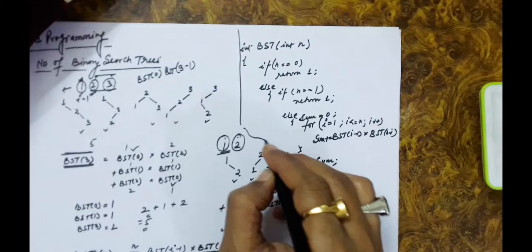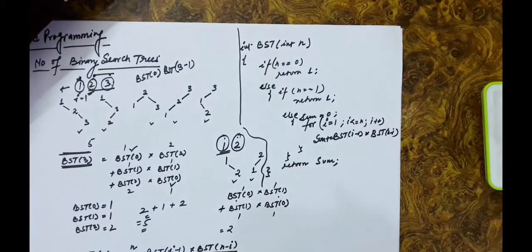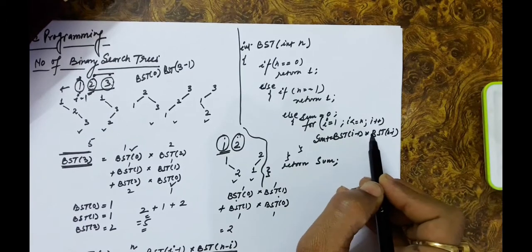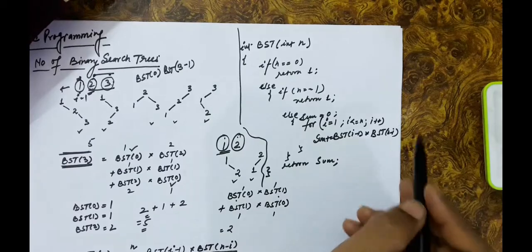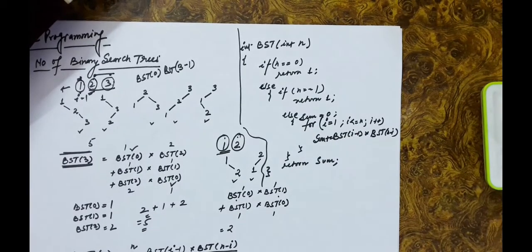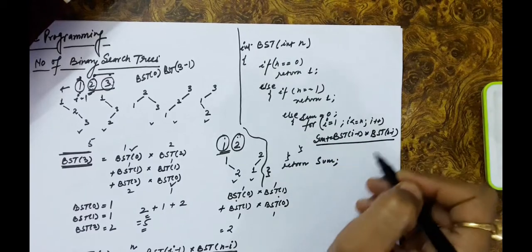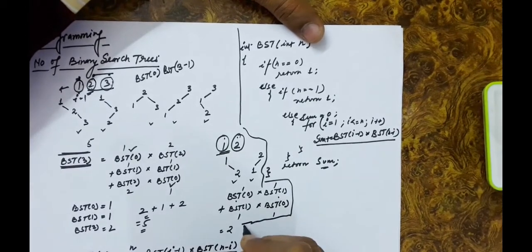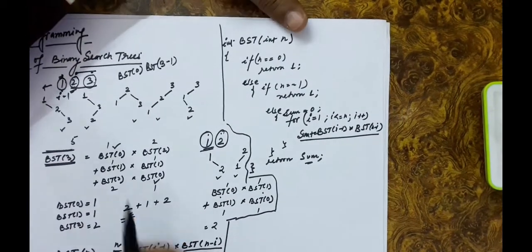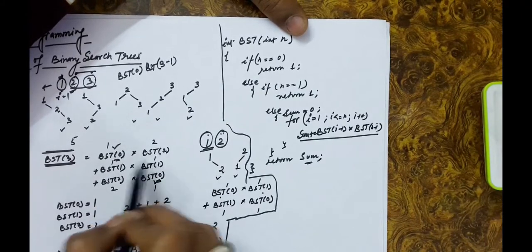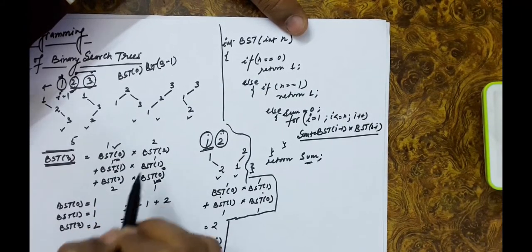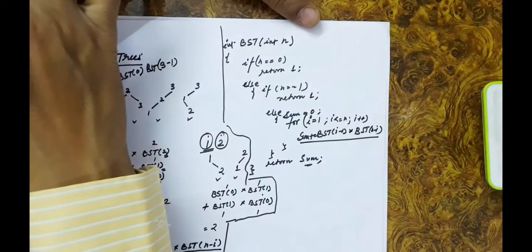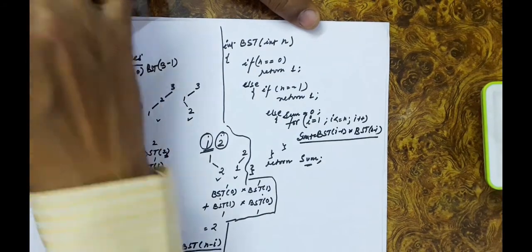We change the root node iteratively and add the total number of trees for each root to a running sum. However, we are making redundant calls — BST(0) is called multiple times, BST(1) is called multiple times, BST(2) is called multiple times. We can save time using memoization.